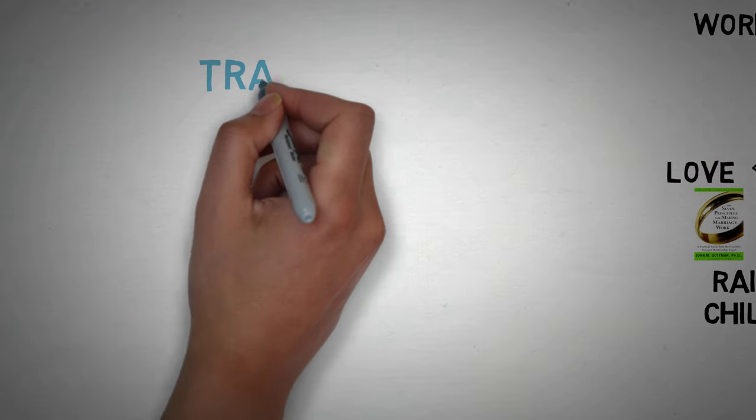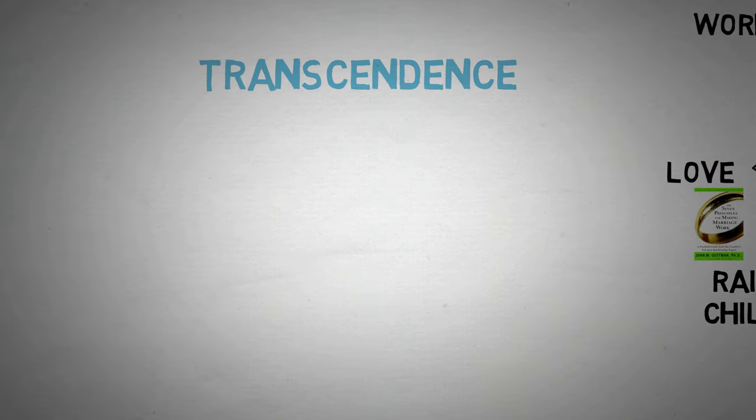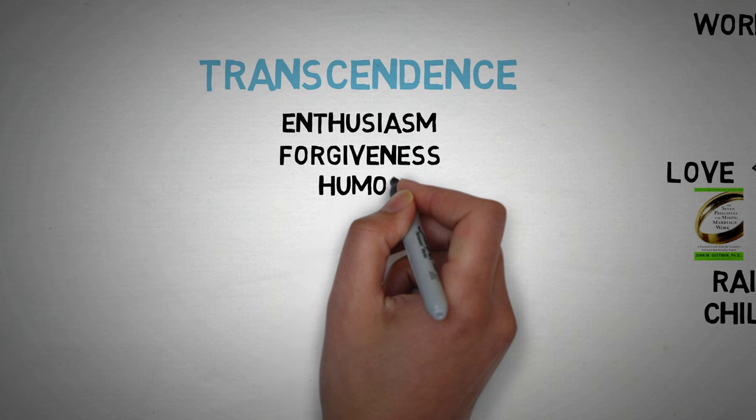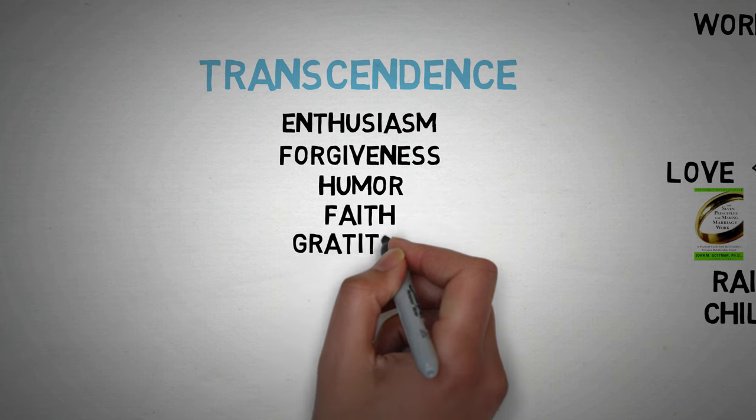So I'm going to go over the six core values and the 24 signature strengths that are associated with them. The first is transcendence. Now, the signature strengths that are associated with this are enthusiasm, forgiveness, humor, faith, gratitude, and appreciation.